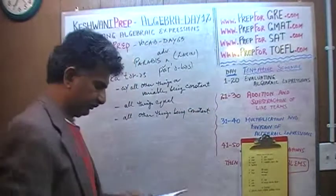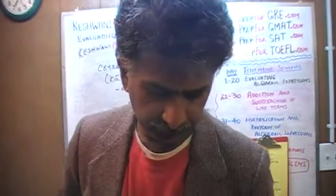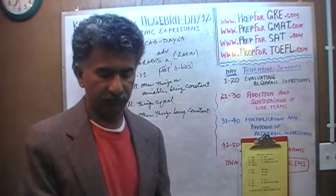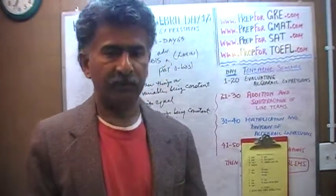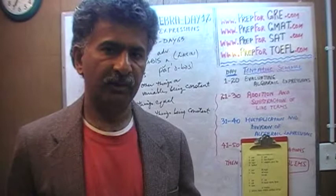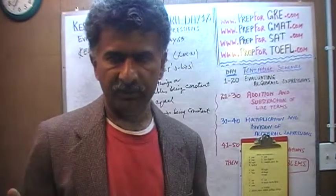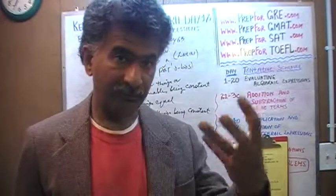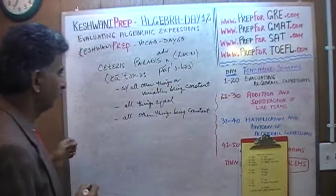Ceteris paribus is used in mathematical textbooks, in science textbooks, in social sciences — it's used everywhere. Ceteris paribus is the assumption we make in order to answer: how does one variable affect another variable? What happens when this particular thing changes, assuming everything else remains constant? That's what it means.